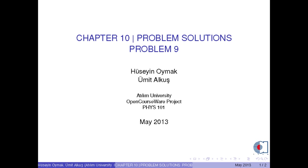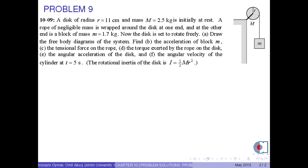In this video, we will solve one problem in Chapter 10. A disk of radius r, which is 11 cm, and mass M, which is 2.5 kg, is initially at rest. A rope of negligible mass is wrapped around the disk at one end, and at the other end is a block of mass m, 1.7 kg.